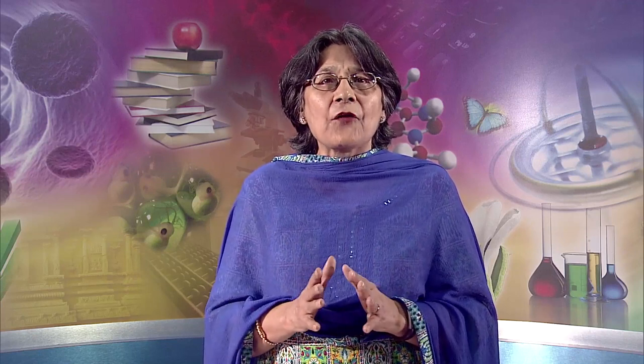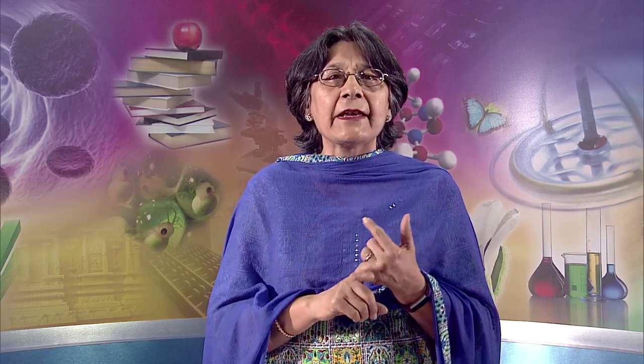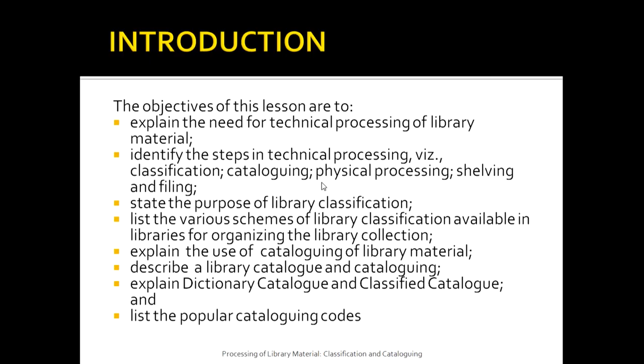The objectives of this particular lesson that we are going to discuss are: firstly, explain the need for technical processing of a library material; secondly, identify the steps in technical processing. For example, the steps are classification, cataloging, physical processing, shelving, and filing of library material.